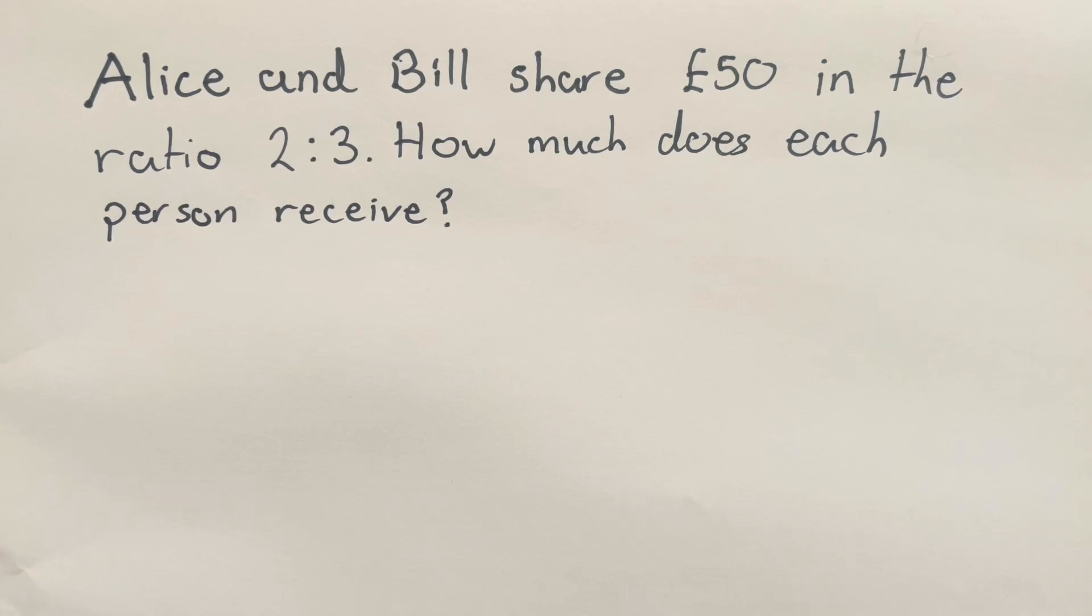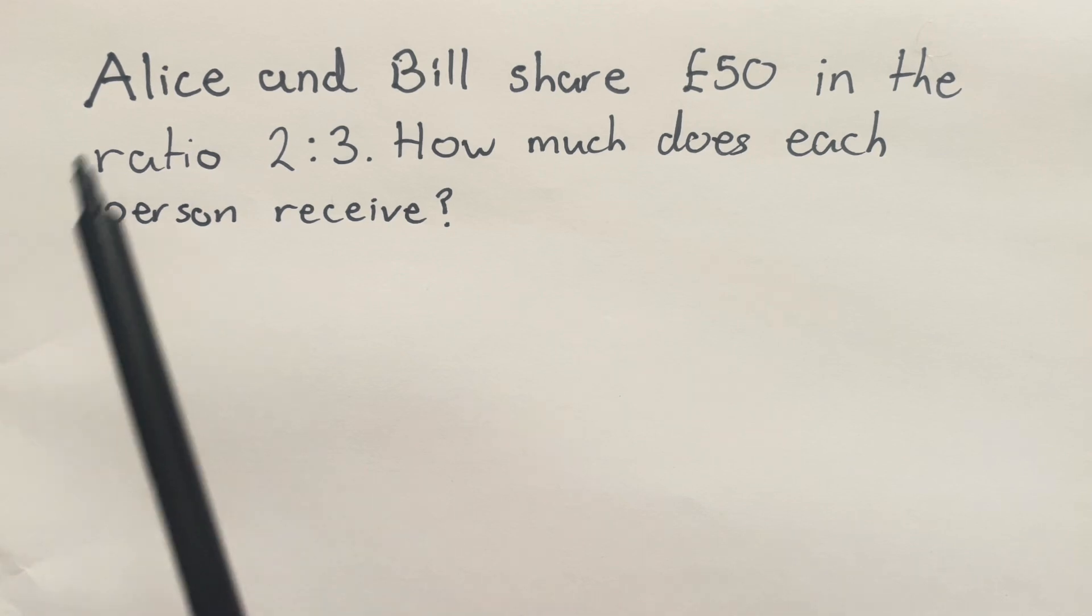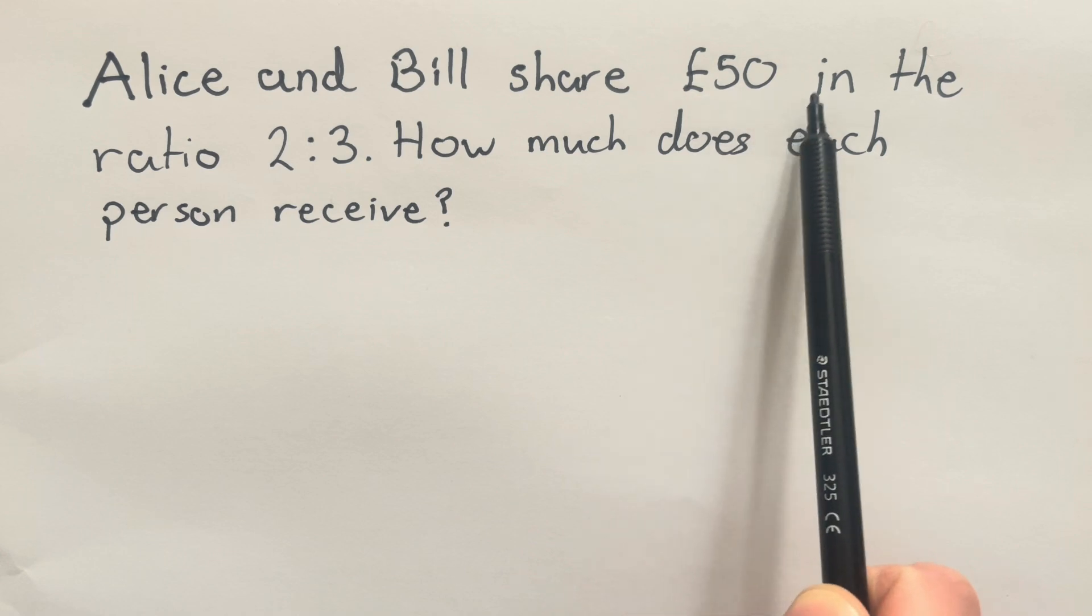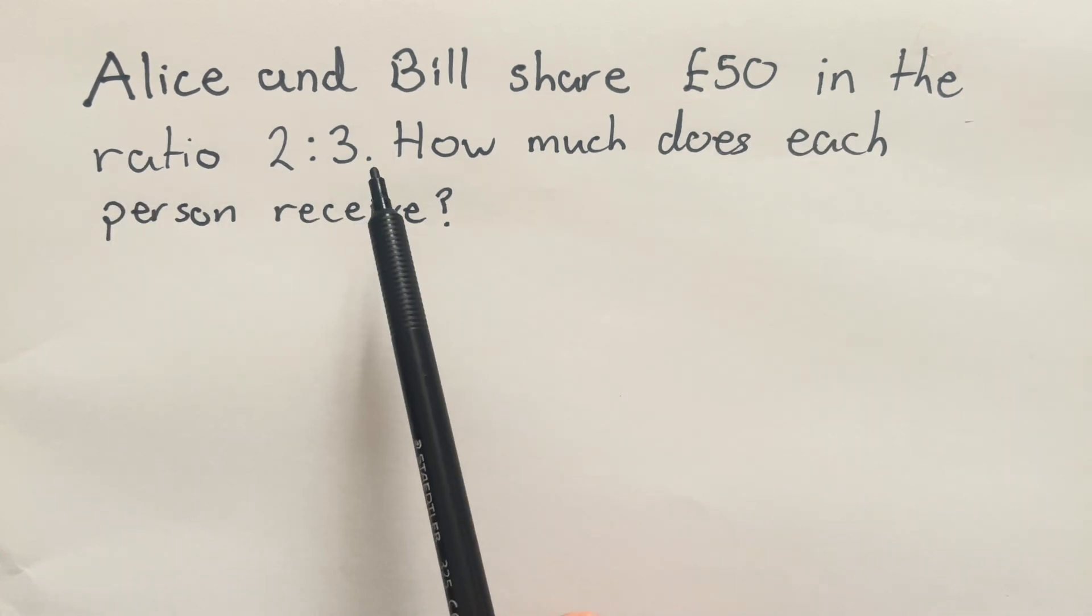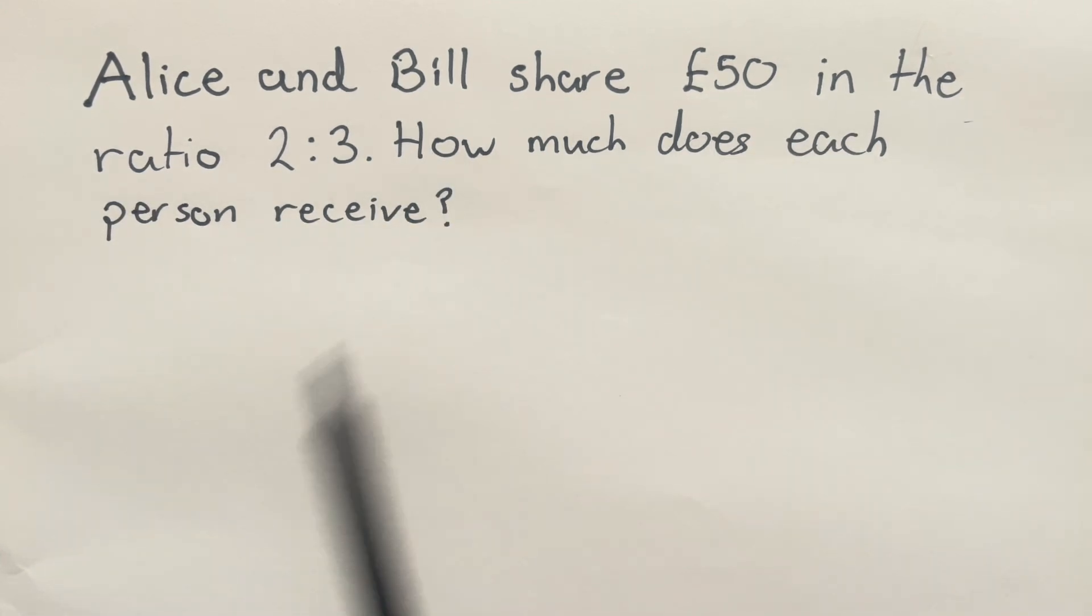Welcome back to Mr Scott Maths. In this video we're going to take a look at how we can share amounts in a ratio. So in this question here we're told that Alice and Bill share £50 in the ratio 2:3. How much does each person receive?